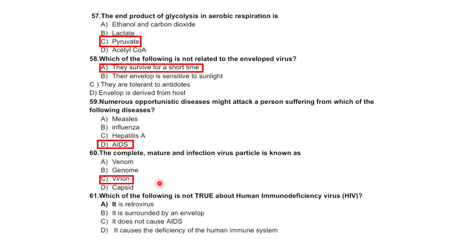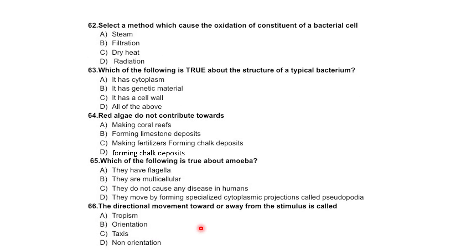Which of the following is not true about human immunodeficiency virus? It is a retrovirus, it is surrounded by an envelope, it does not cause AIDS, or it causes deficiency of the human immune system — the incorrect statement is that it does not cause AIDS. A method which causes oxidation of the constituents of a bacterial cell includes steam, filtration, dry heat, and radiation.